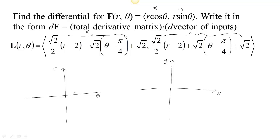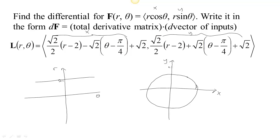We can see what this linearization is doing geometrically, because the original bold F is the transformation from polar into Cartesian. If you fix r in the original transformation, a line of constant r turns out to be a circle. But if we fix r in the linearization, then r becomes a constant, and we have x equals negative root 2 times theta and y equals positive root 2 times theta — that's a parameterization of a line with slope negative 1. So at our particular location, instead of getting a circle, we get the line that is tangent to the circle right there.